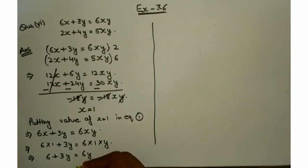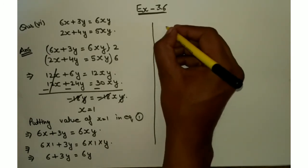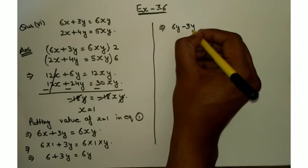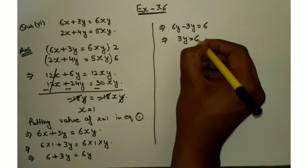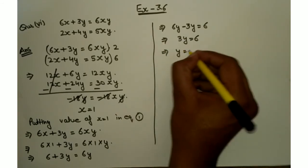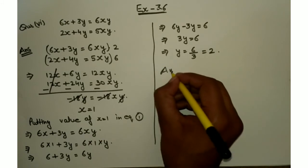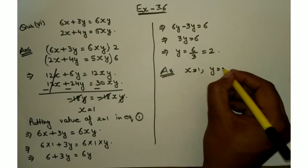Now we have to simply find the value of y. Y को एक साइड पे लेके जाएंगे और normal terms को दूसरी साइड पे रखते हैं. So 6y minus 3y equals 6, and 3y equals 6. So y equals 6 by 3 equals 2. So our answer is x equals 1 and y equals 2.